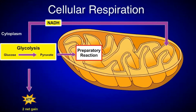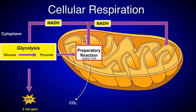Stage two is the preparatory reaction. During this stage, the pyruvate from glycolysis is moved into the mitochondria, where it is converted into acetyl-CoA. During this conversion process, more NADH is produced and carbon dioxide is released.